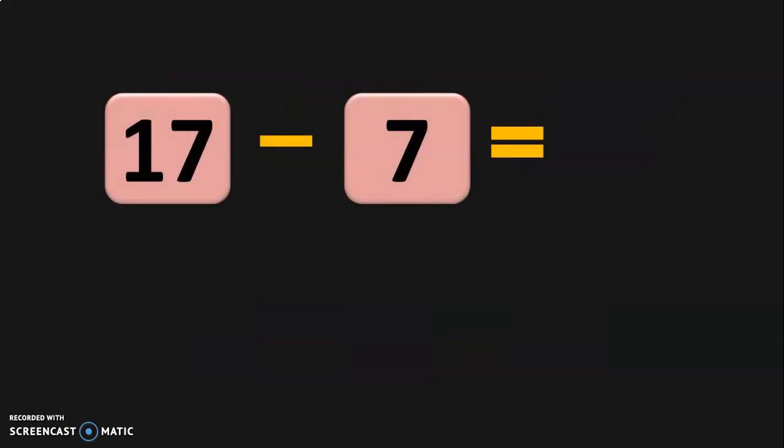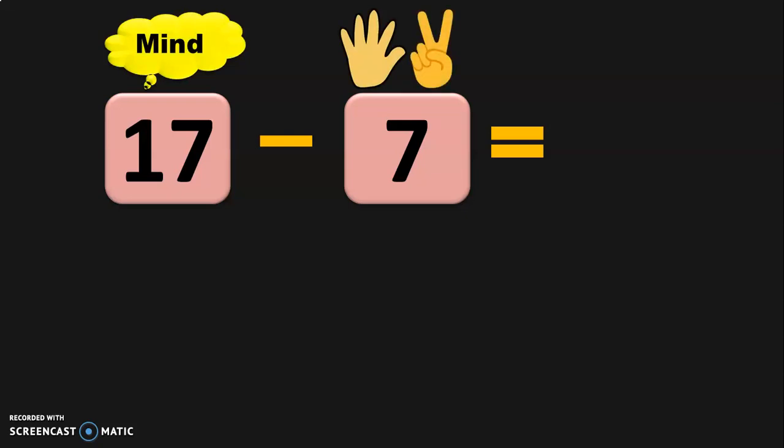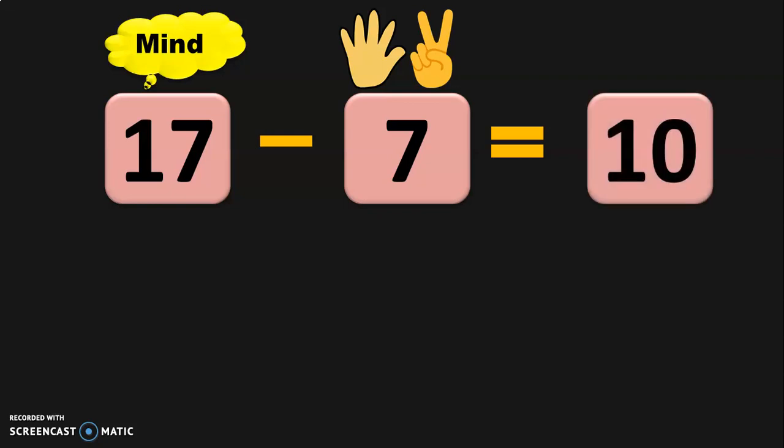Let us do the next sum: 17 minus 7 equals what? This is horizontal subtraction — numbers written in a horizontal format with a subtraction sign in between. We keep 17 in the mind and 7 in the fingers: 5 fingers in one hand and 2 in the other. Since it is subtraction, we do before numbers — before 17: 16, 15, 14, 13, 12, 11, 10. So 17 minus 7 is equal to 10.